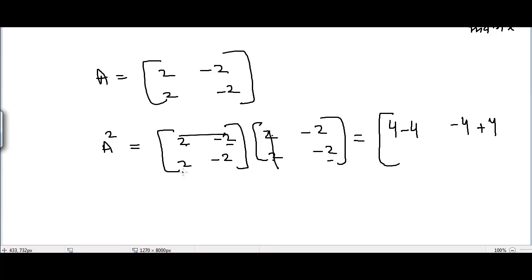Second row, first column: 2 times 2 is 4 and -2 times 2 is -4. Second row, second column: 2 times -2 is -4 and -2 times -2 is +4.